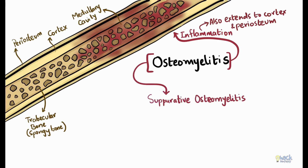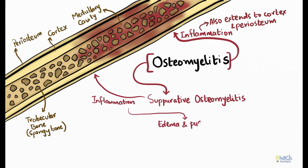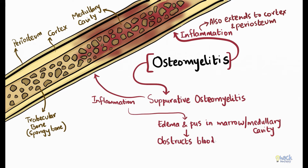Suppurative osteomyelitis of the jaw is a condition when an inflammatory process in the medullary portion of the bone leads to edema and pus accumulation in the marrow spaces. This accumulation of purulent exudate builds up medullary pressure and obstructs the local blood supply, leading to necrosis of the bone.